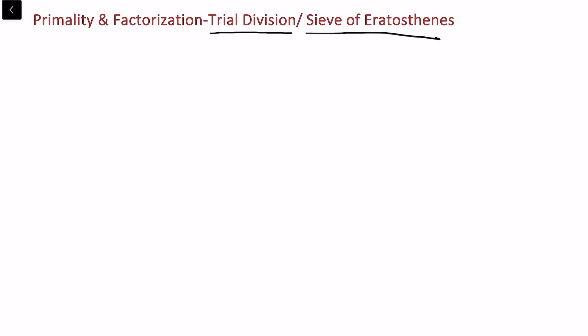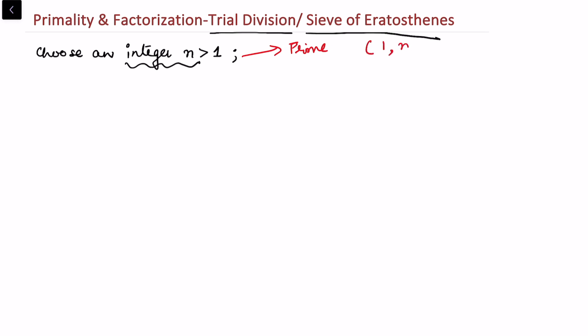In this video we'll be doing a primality and factorization method, which is basically a trial division method. It comes from the Sieve of Eratosthenes. To do this method, select an integer n that we wish to find either the factorization of, or check whether it is prime or not. We consider n greater than one. The two objectives are: check if n is prime, in which case its only factors are 1 and n.